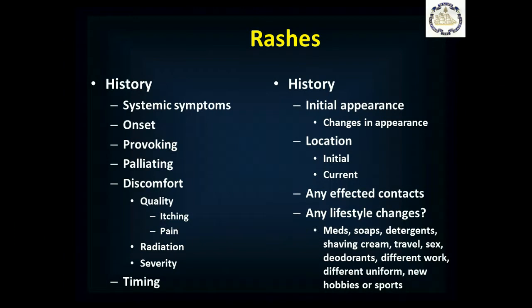When you see a patient with a rash, obtain a rash history starting with: do you have any other symptoms? Systemic symptoms — fevers, chills, weight loss, loss of appetite, change of bowel habits, chest pain, shortness of breath, night sweats — anything else going on? That will help point you toward whether this is simply a local rash or a sign of something more significant.